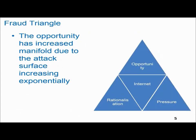Looking at the fraud triangle in fraud risk management: there are three attributes — opportunity, pressure, and rationalization — that make a person a criminal. With the increased attack surface and proliferation of the internet, the opportunity to commit fraud has increased manifold, while pressure and rationalization keep driving the fraudster to continue committing fraud.